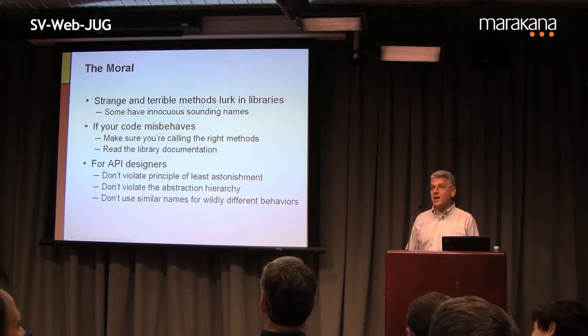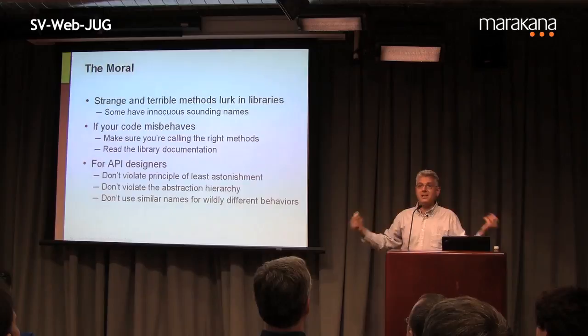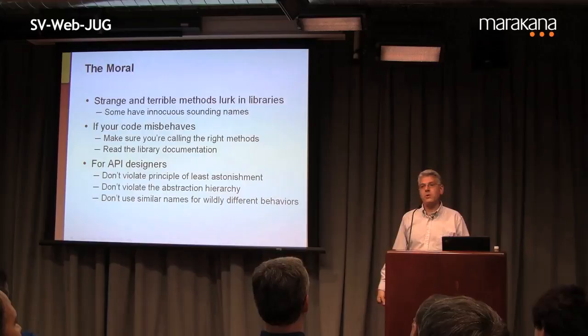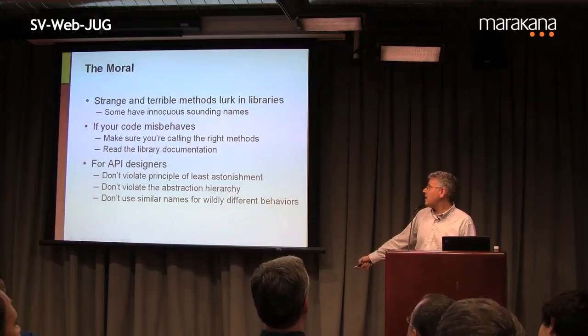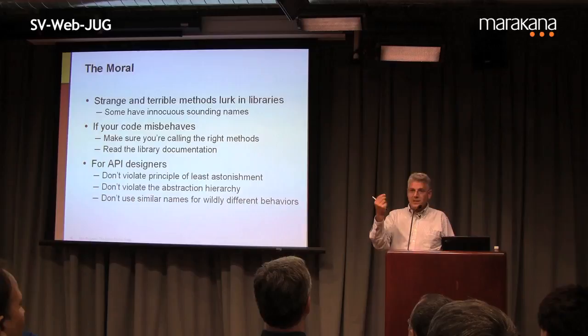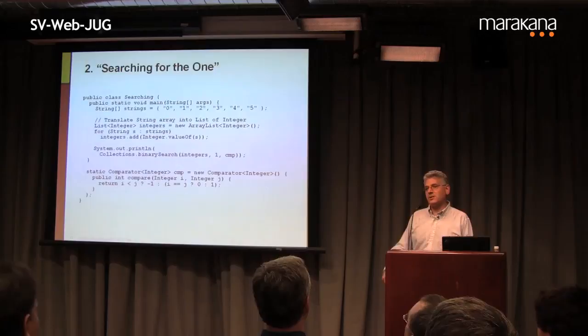Don't violate the principle of least astonishment: every method should do the least astonishing thing given its name and arguments. Boolean.getBoolean certainly astonished most of you. Also don't violate the abstraction hierarchy — good software is hierarchical. The class Integer is a low-level wrapper for an int. What's it doing calling out to system properties? Properties is high-level and should depend on Integer, not the other way around. Don't use similar names for wildly different behaviors.